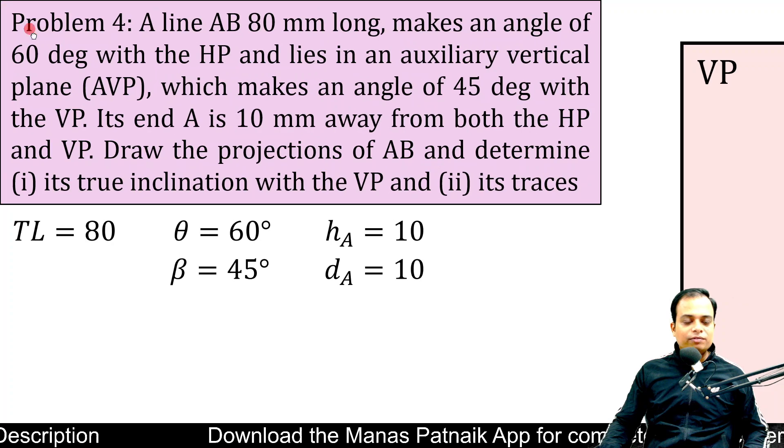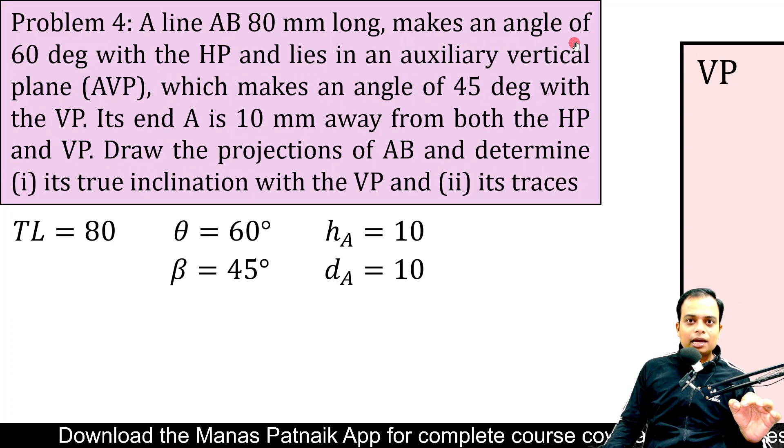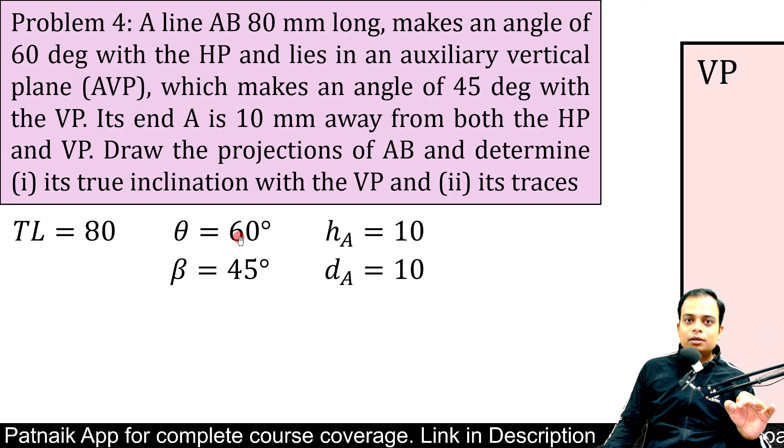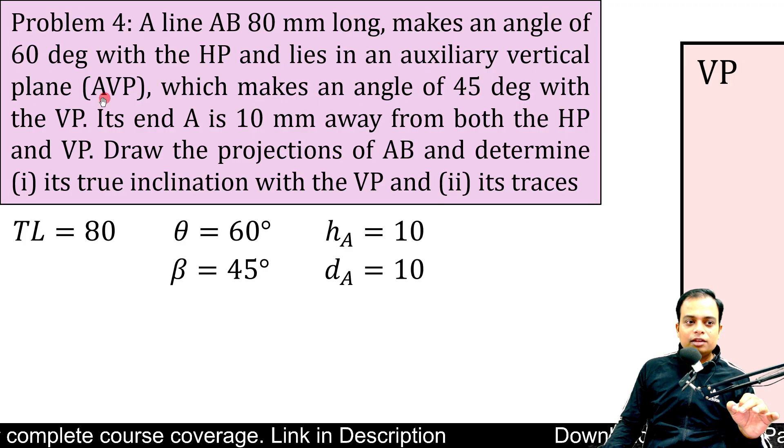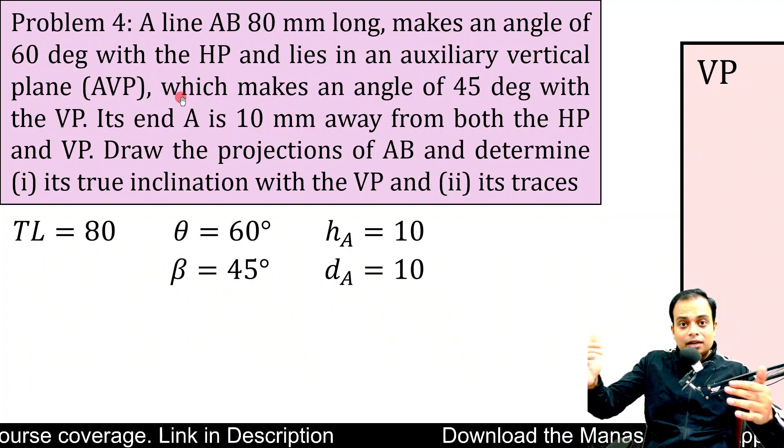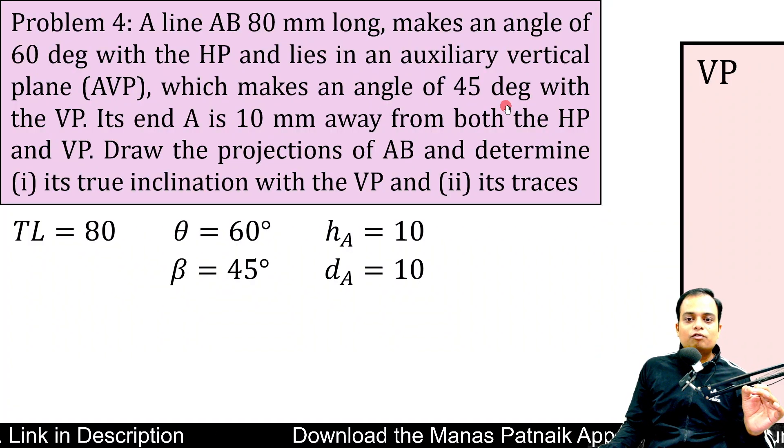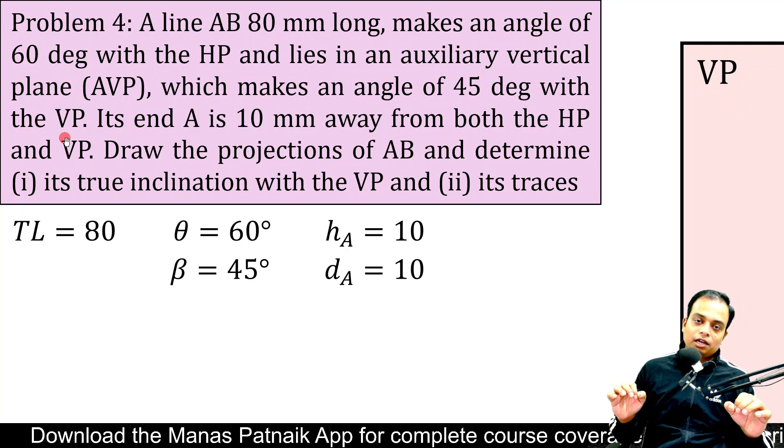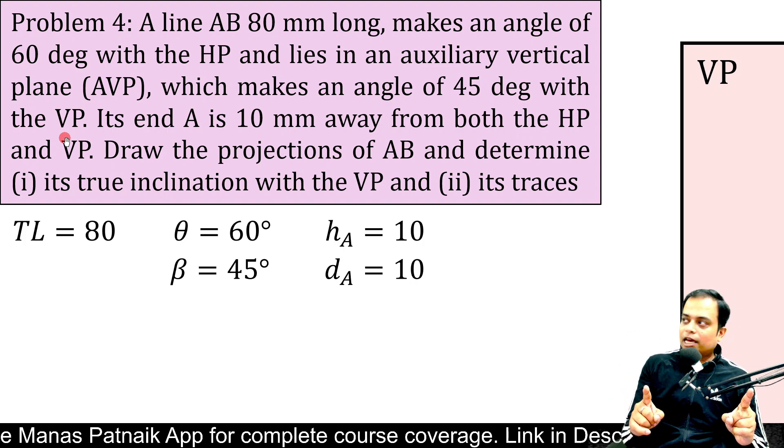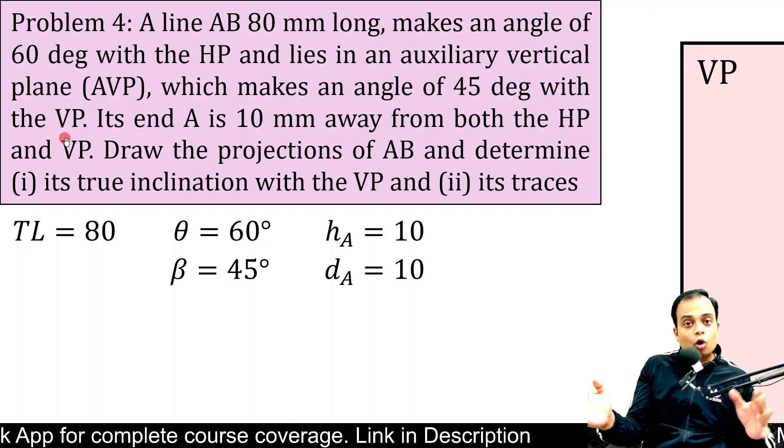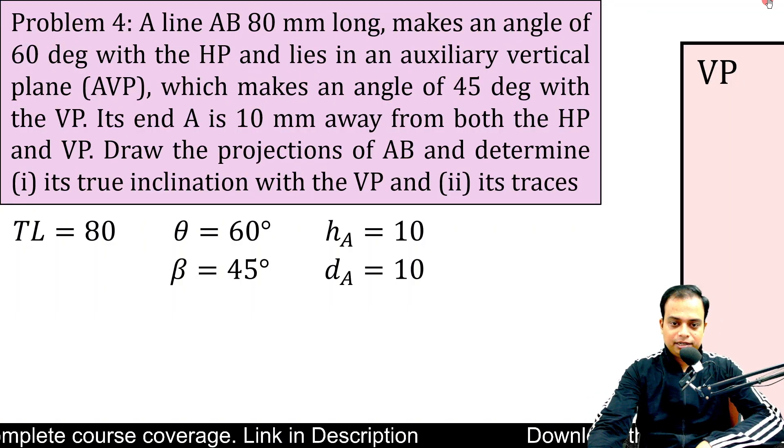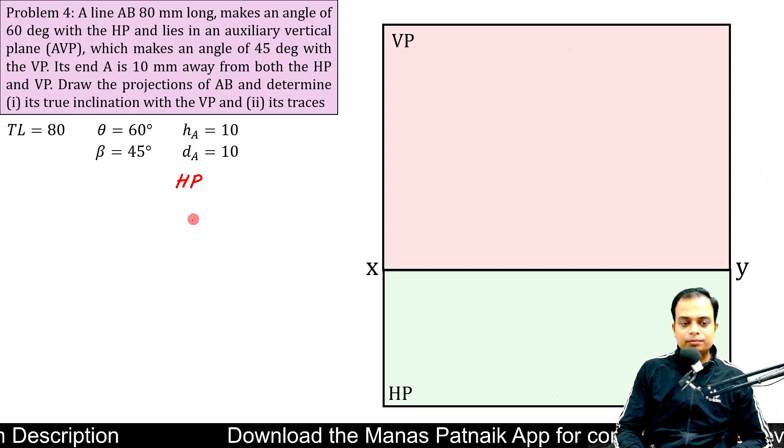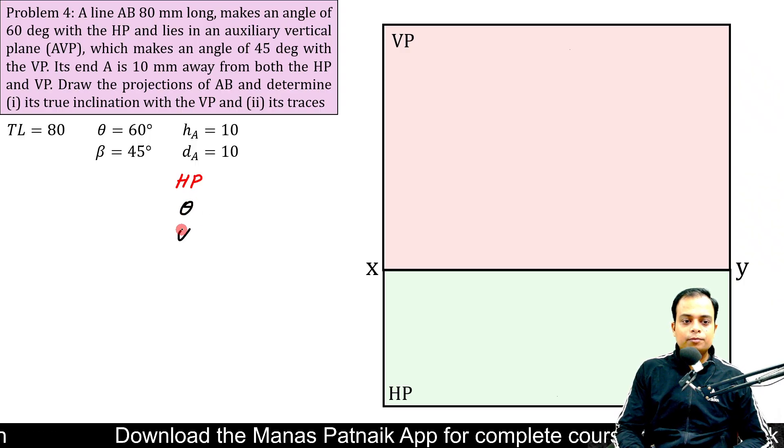Let's read the question first. What we have is basically a line 80 millimeters long. It makes an angle of 60 degrees with the horizontal plane. Full length is 80 and the angle that it makes with HP is 60. It lies in an auxiliary vertical plane. The line itself lies in an auxiliary vertical plane, which makes an angle of 45 degrees with the VP. Now this statement is specifically meant to confuse you, confuse you between two angles. Angle made with VP can be thought of in two ways. Either it could be phi or it could be beta.